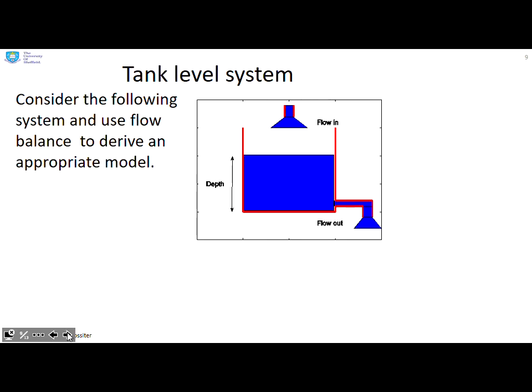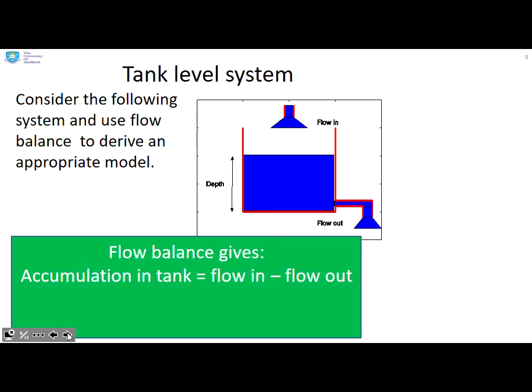Finally, let's look at a tank level system where we're going to need some form of flow balance. The flow balance here is going to be that the accumulation of water in the tank is going to be the flow in minus the flow out. So I can write that down as dv/dt, the rate of change of volume in the tank, is flow in minus flow out.